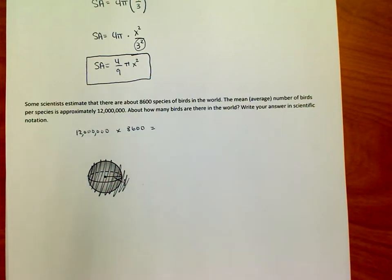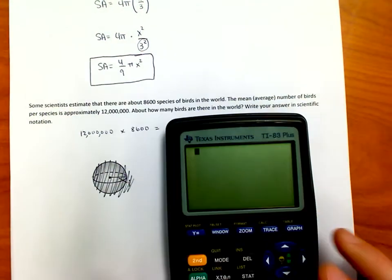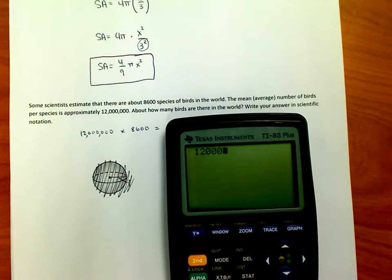So, I made a mistake of not getting my calculator out. Here we go. I found my calculator. So, all I'm going to do, then, is I'm going to take 12 million, multiply it times 8,600. And I get an answer that looks like this.